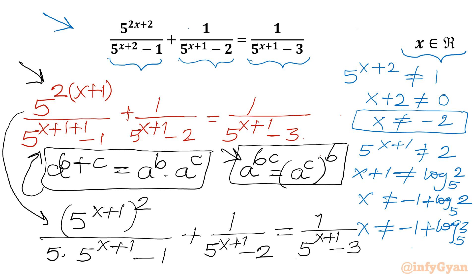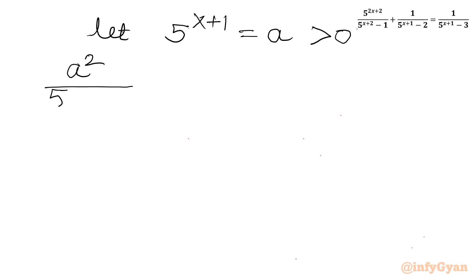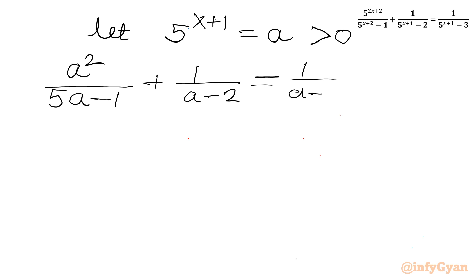It is now clearly visible that 5^(x+1) will be our substitution. Let a = 5^(x+1), and a must be greater than 0 since it is an exponential function. Our equation becomes: a² / (5a - 1) + 1/(a - 2) = 1/(a - 3).